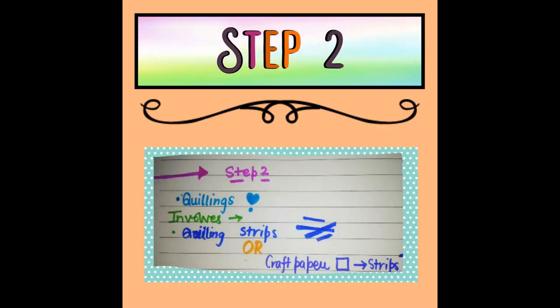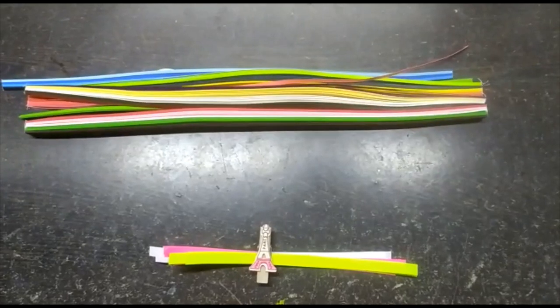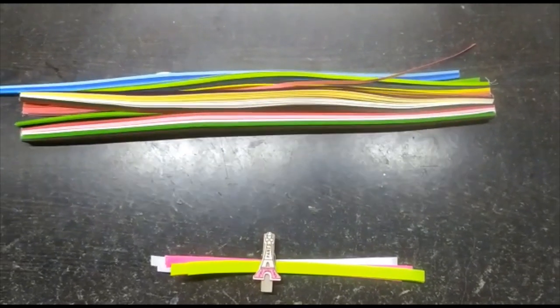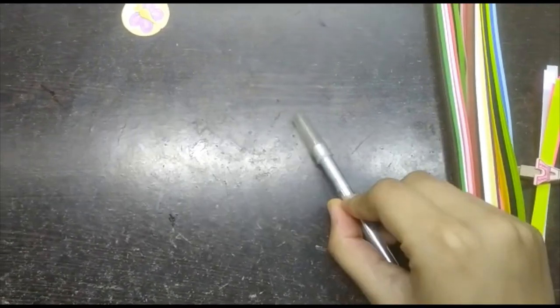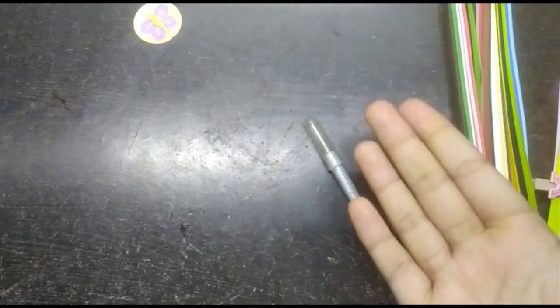Step 2 involves quillings. For quilling we will need some quilling strips or some craft paper strips. For making quills you can either use a quilling tool or you can make it by hand.